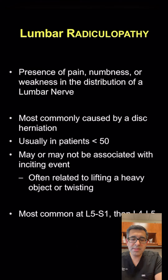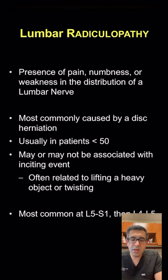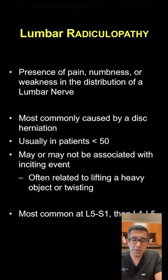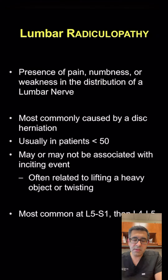Usually it's present in patients younger than the age of 50, but occasionally we do see it in older patients as well. This may or may not be associated with an inciting event. Often we'll get the story that a patient was lifting something heavy or did a twisting type of movement that caused this pain, but there are times when the pain just started all of a sudden. Most commonly this happens at the L5-S1 level and then at the L4-L5 level. These two levels make up more than 90% of the segments where radiculopathy happens due to disc herniation.